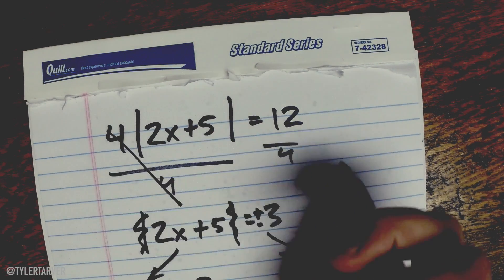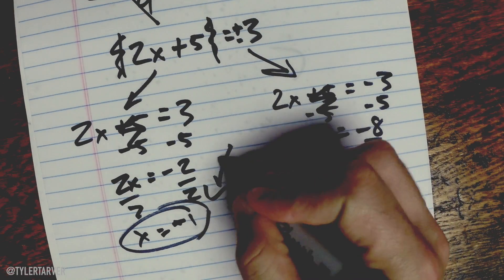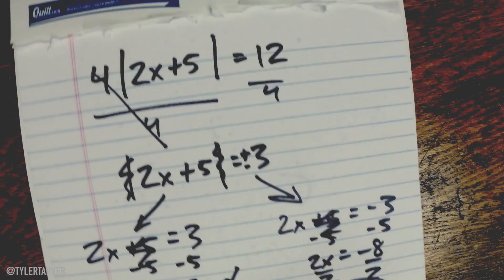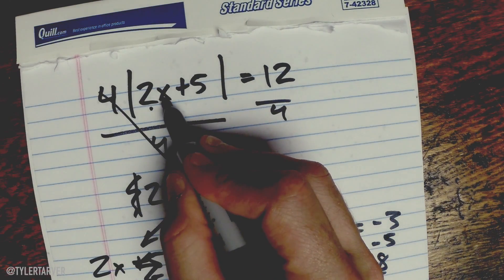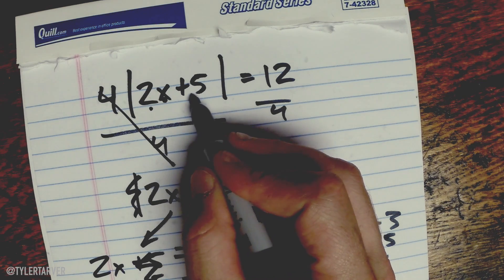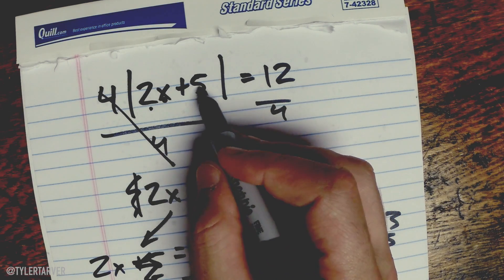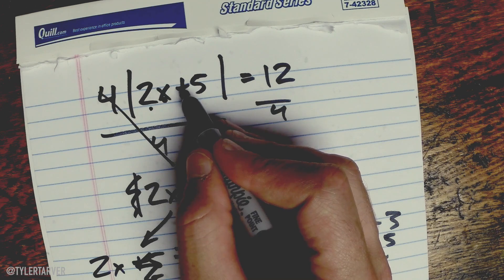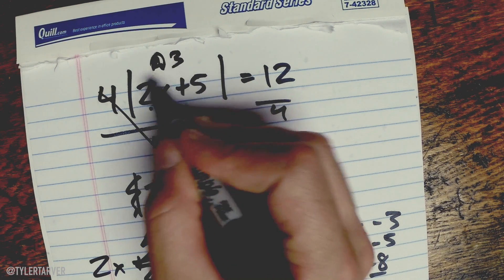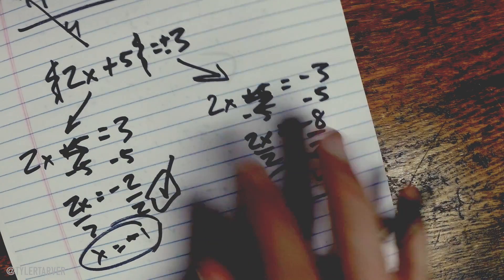Let's try our second one, negative 4. So 2 times negative 4 is negative 8, negative 8 plus 5 is negative 3, the absolute values would kill the negative out of there, and then 3 times 4 is 12, 12 equals 12. This one works as well, so we got both of our correct answers from this equation.